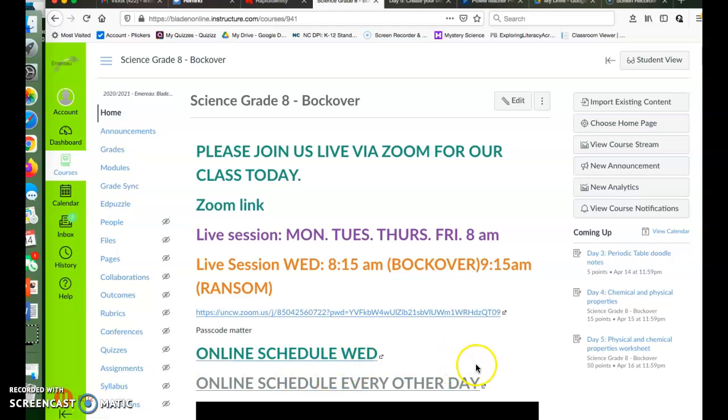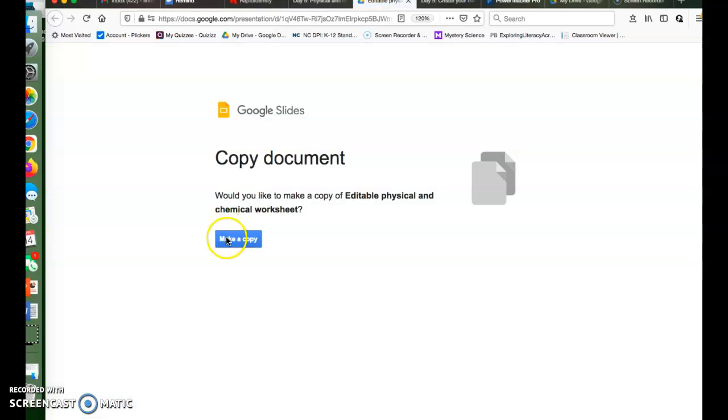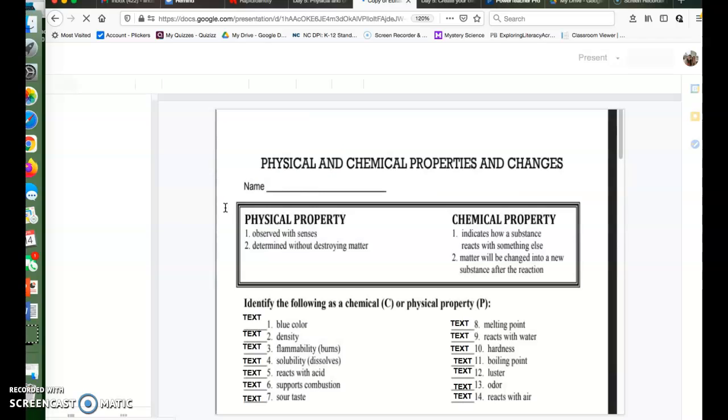All right, here we go. This is your introduction to your worksheet today, day five: chemical properties and physical properties worksheet. If you'd like to complete them in your notebook, if you'd like to do them electronically today, you'll go to the Google Slides. Give it a second to do its thing.